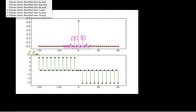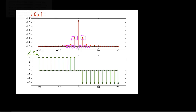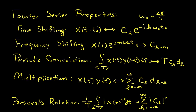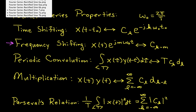One last comment: we found our result when we multiplied r by the sine wave using the multiplication property, which said that the product of two time signals leads to the convolution of their Fourier series coefficients. It turns out there's another way we could do that using the frequency shifting property.